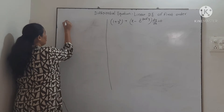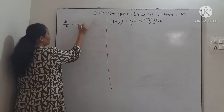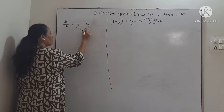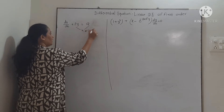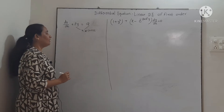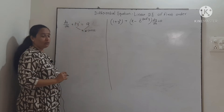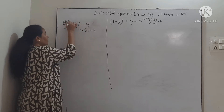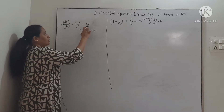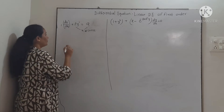The equation of the type dy/dx + Py = Q, where P and Q are functions of x or constants, is known as a linear differential equation in variable y. The highest power of y must be equal to 1, the coefficient of dy/dx is 1, and the degree of dy/dx is also 1. On the right-hand side we want a function of x only, or it may be constant.